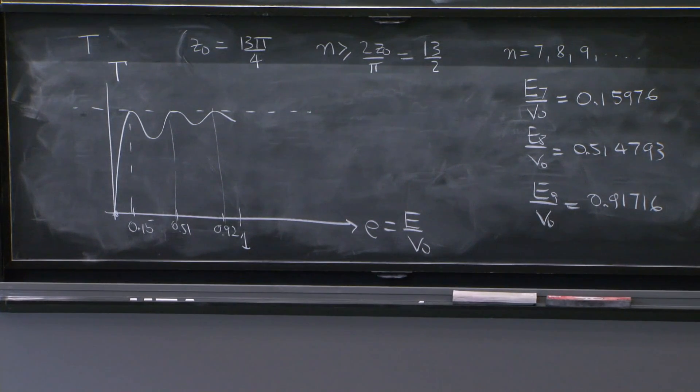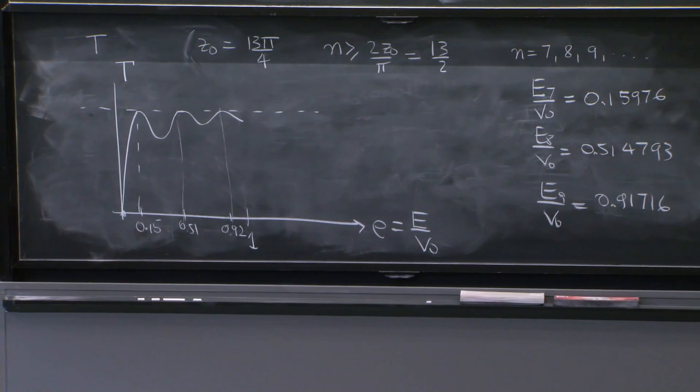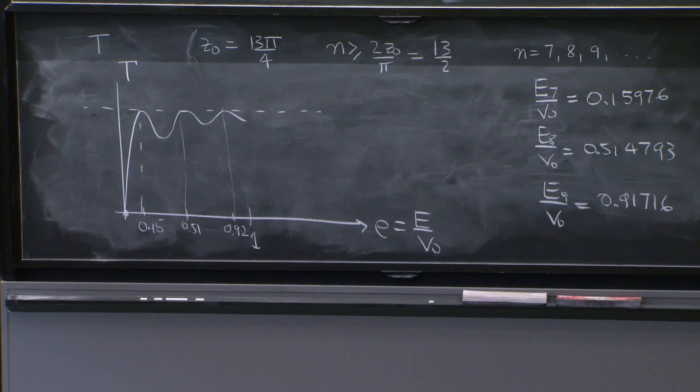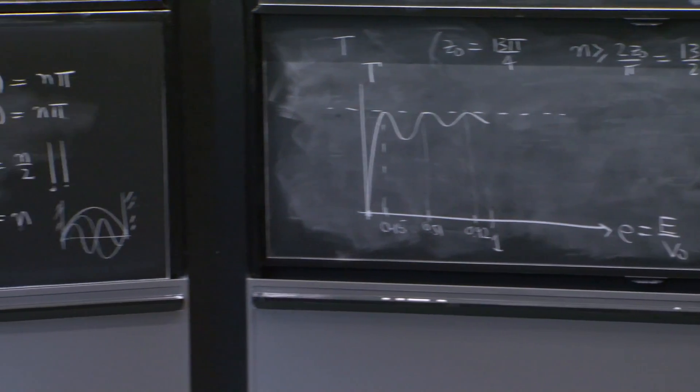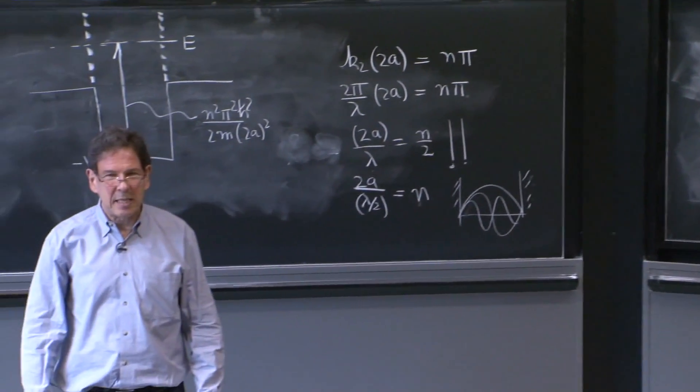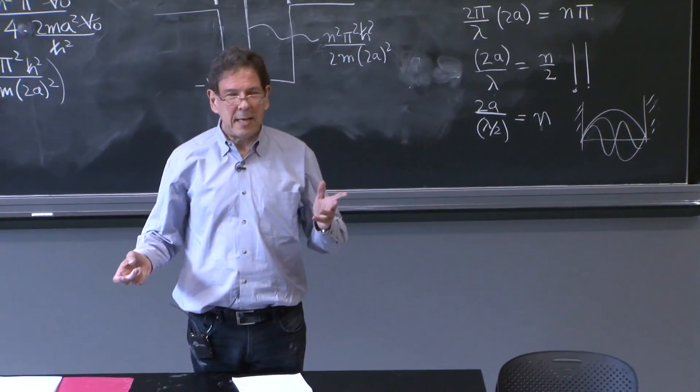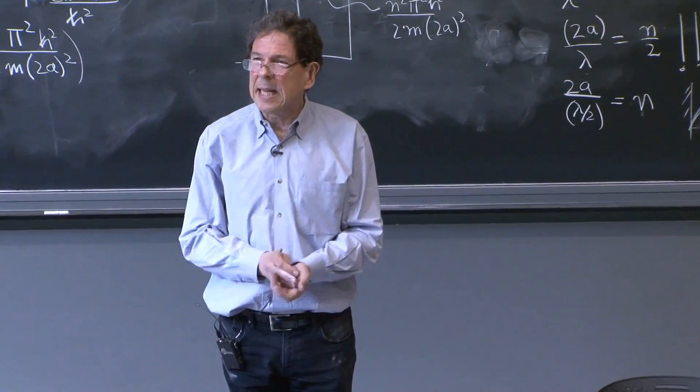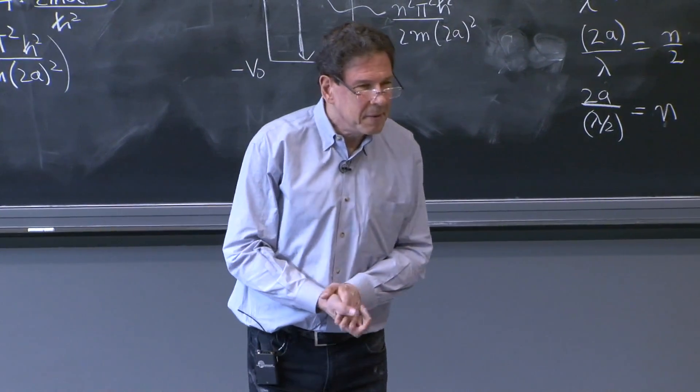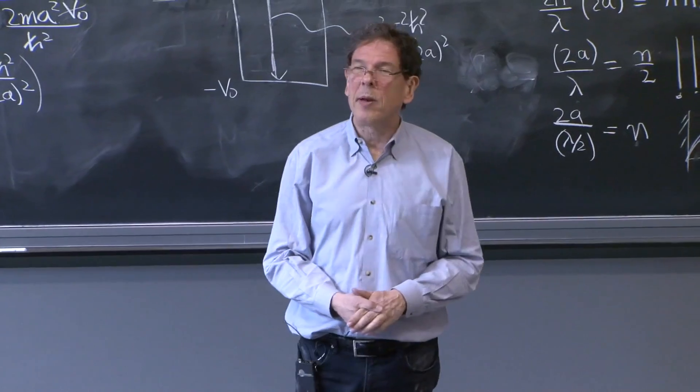So these two people we're talking about, Rumsauer and Townsend, lived from the 1860s to 1940s and 50s. And they did their famous experiment in 1921.